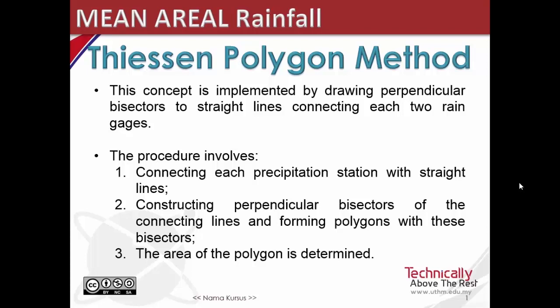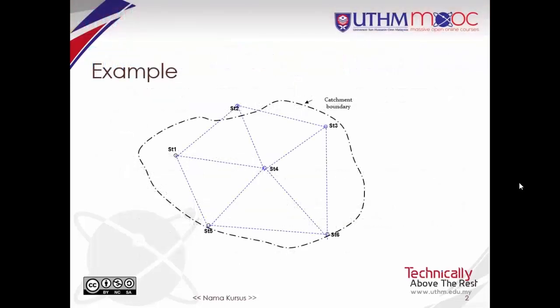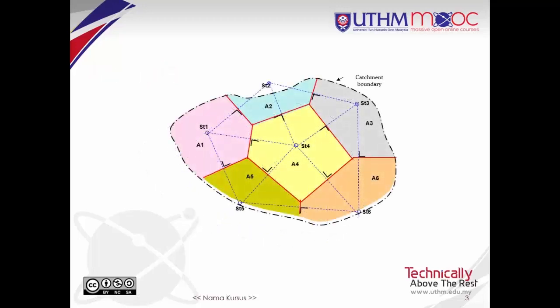This procedure is not suitable for mountainous areas because of orographic influences. The procedure involves first connecting each precipitation station with straight lines, and then constructing perpendicular bisectors of the connecting lines and forming polygons with these bisectors.